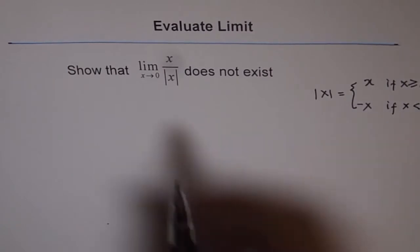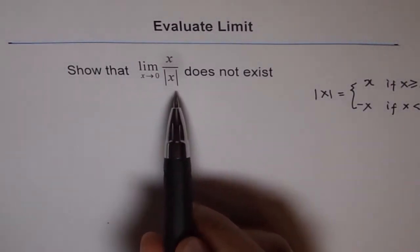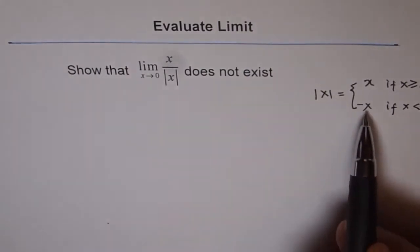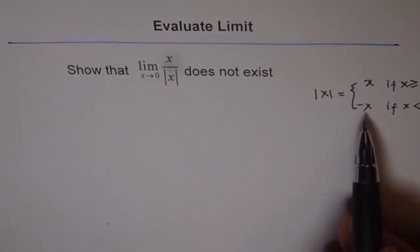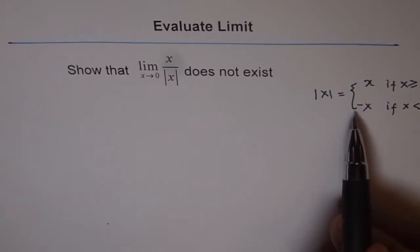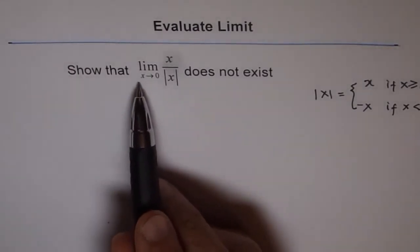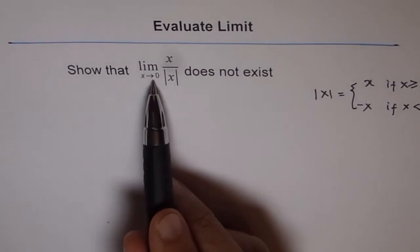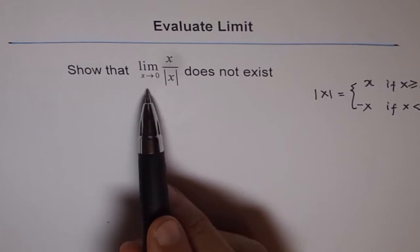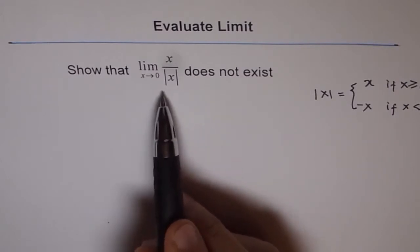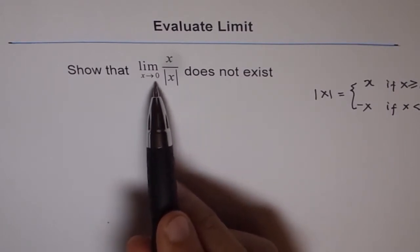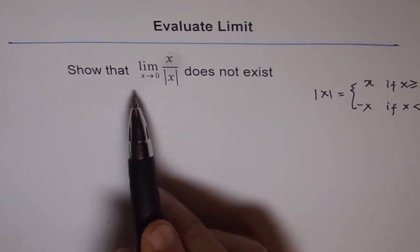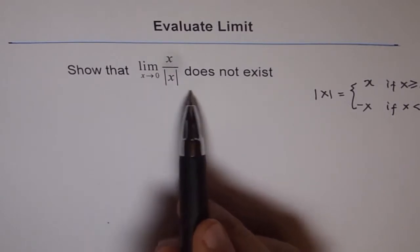So basically if we have a limit problem with absolute function, we have to always see it as a piecewise function. Now, since we are interested in x approaching 0, x approaching 0 means you need to approach from negative side as well as from positive side. What I'm trying to say is, you need to approach 0 from left as well as from right.